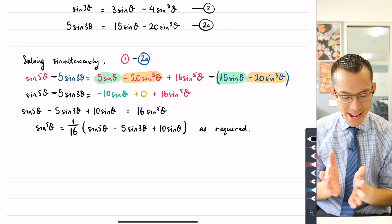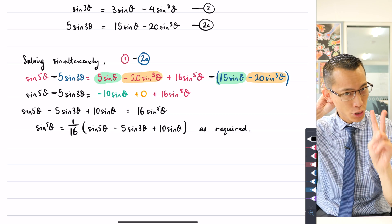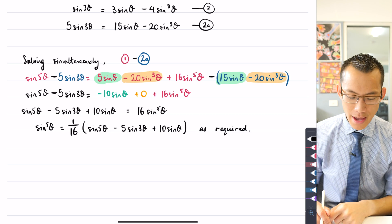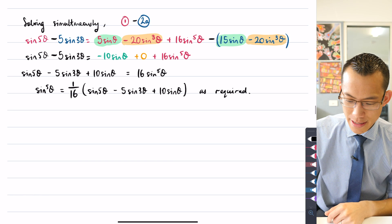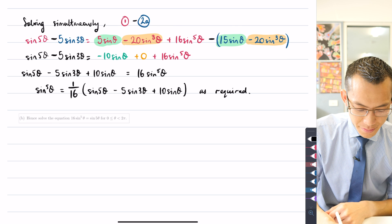Take a breath. That was part A. It's a messy looking identity, but the whole point of getting this out of our two applications of DeMoivre's Theorem is because it allows us to tackle part B. So let's bring that back into view. Here's part B.